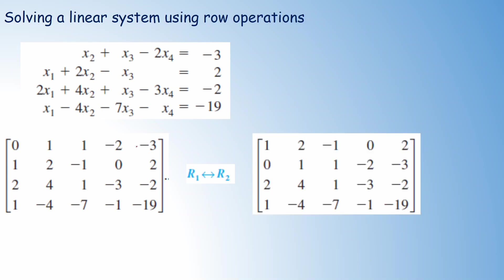In the new matrix, the second row becomes the first row and the first row becomes the second row. Having obtained a non-zero value at the top of the column, we make sure it is 1 — it already is 1. The next step is to make all entries below this pivot element equal to 0. The entry in row 2 is already 0; we need to make the entries in rows 3 and 4 equal to 0.